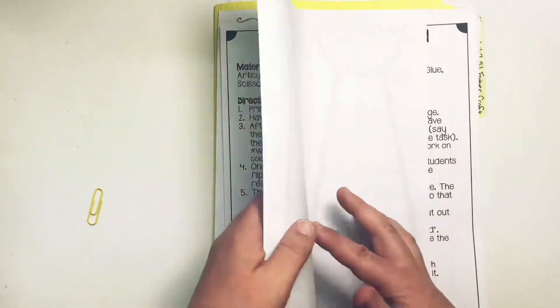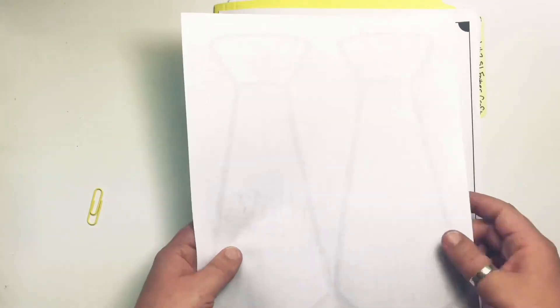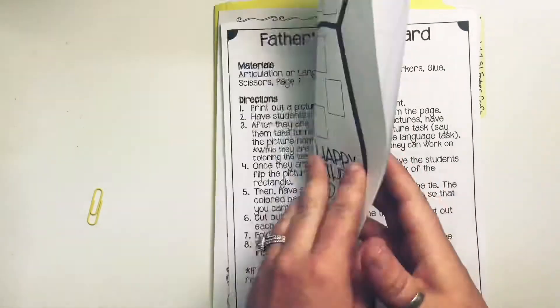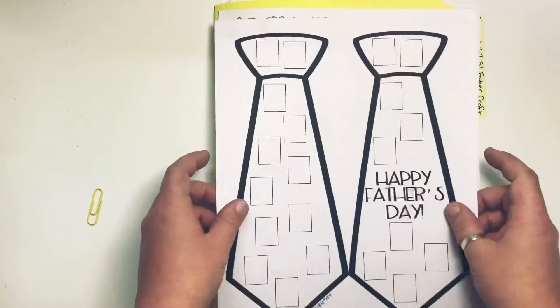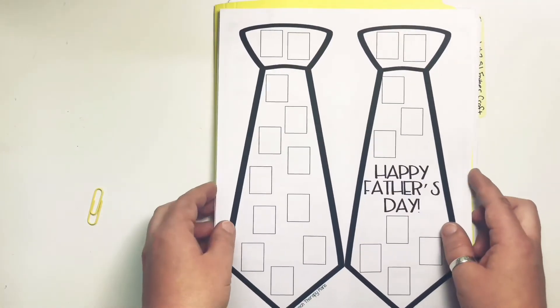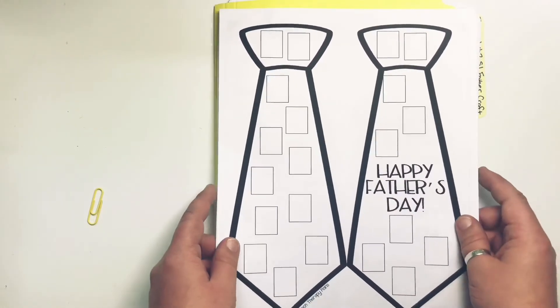Then they write a note inside and then that's the back of the card. So if you don't have 21 pictures or have time to do it or don't even want to use the articulation or language list.